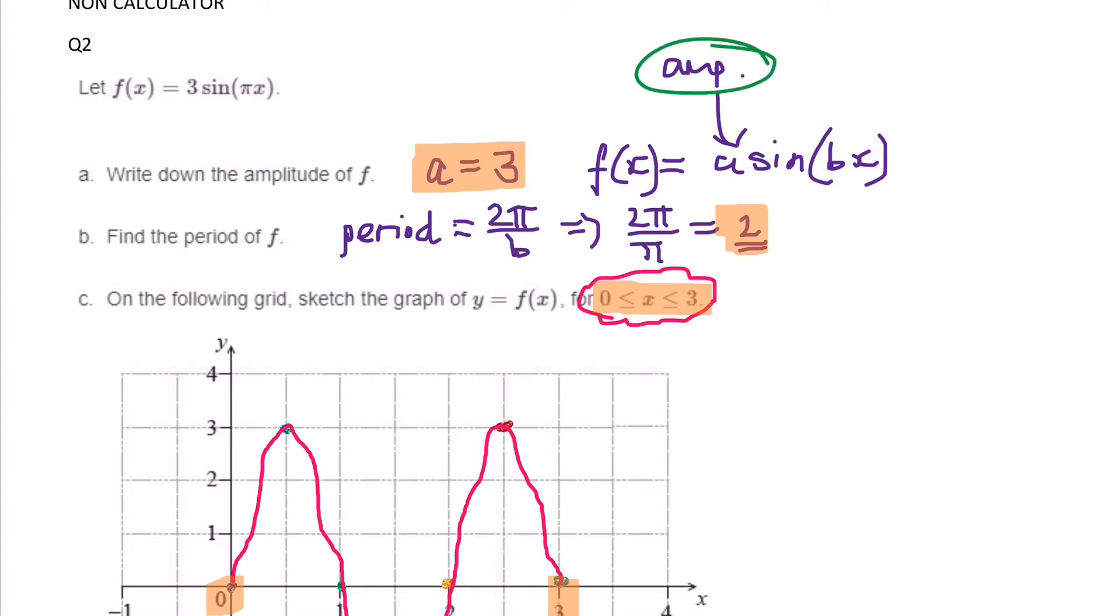Then it says find the period. Well there's a formula you need to remember: period is equal to 2 pi divided by B. So B we know is pi because it tells us here. So therefore 2 pi divided by pi is going to give us 2.